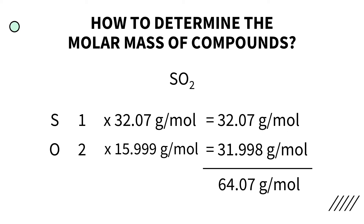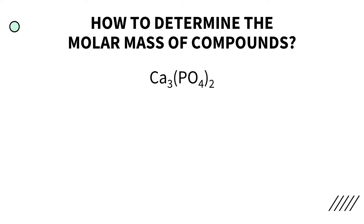In another example, we have calcium phosphate. Following the same steps, we determine the elements in the compound: calcium, phosphorus, and oxygen. We then determine how many atoms of each element are in the compound. We have three atoms of calcium, and if we distribute the subscript 2 in the parentheses, we get two atoms of phosphorus and eight atoms of oxygen.